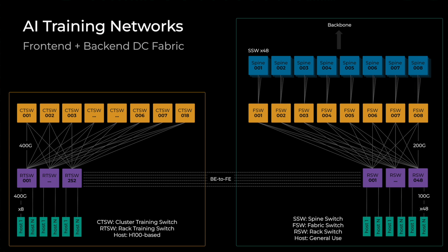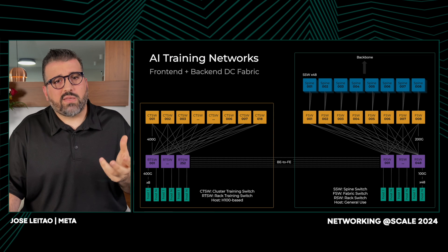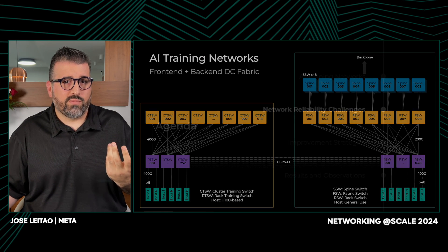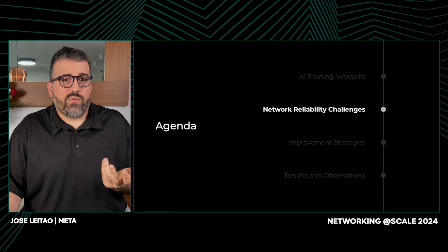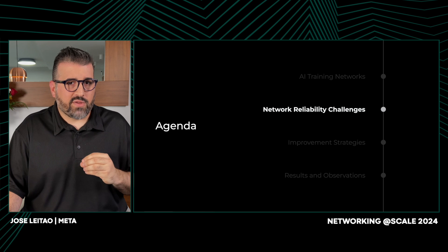To sum up, these networks are designed to cater to a broad spectrum of computing needs. The front-end offers robust and adaptable capabilities for general applications, while the backend provides a specialized, high-performance environment tailored for the demanding needs of AI training. Together, these two distinct yet complementary fabrics form a comprehensive solution. Hopefully, this provides a bit of color on how our networks are set up.